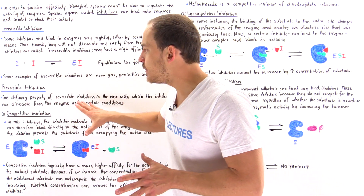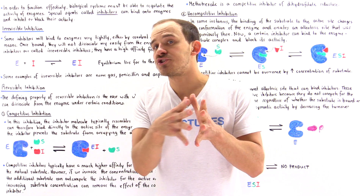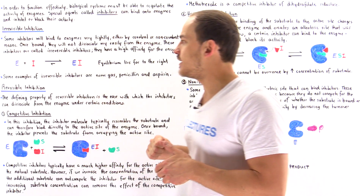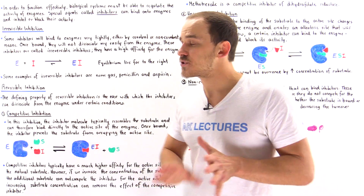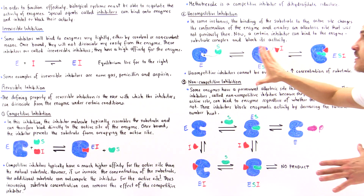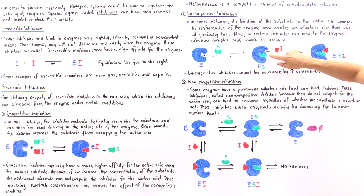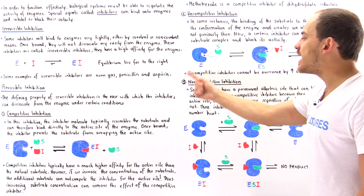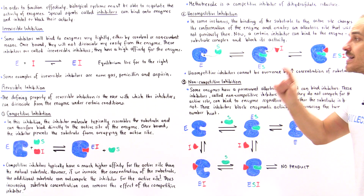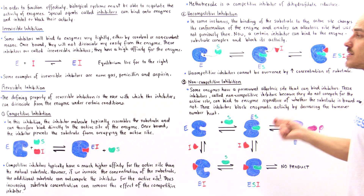In reversible inhibition, the inhibitor binds onto the enzyme relatively weakly, so dissociation can take place quickly under the proper conditions, in contrast to irreversible inhibition. In reversible inhibition we have three types: competitive inhibition, in which the inhibitor binds directly to the active site; uncompetitive inhibition, in which the inhibitor binds onto the allosteric site formed only when the substrate is bound onto the active site; and non-competitive inhibition, in which the enzyme always contains an allosteric site, so the inhibitor can bind regardless of whether the substrate is bound.